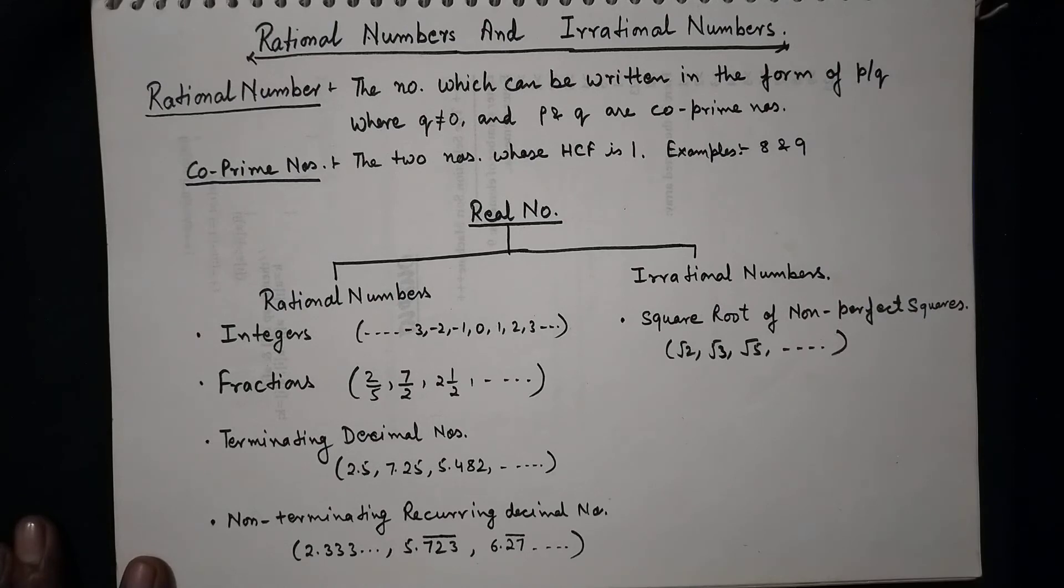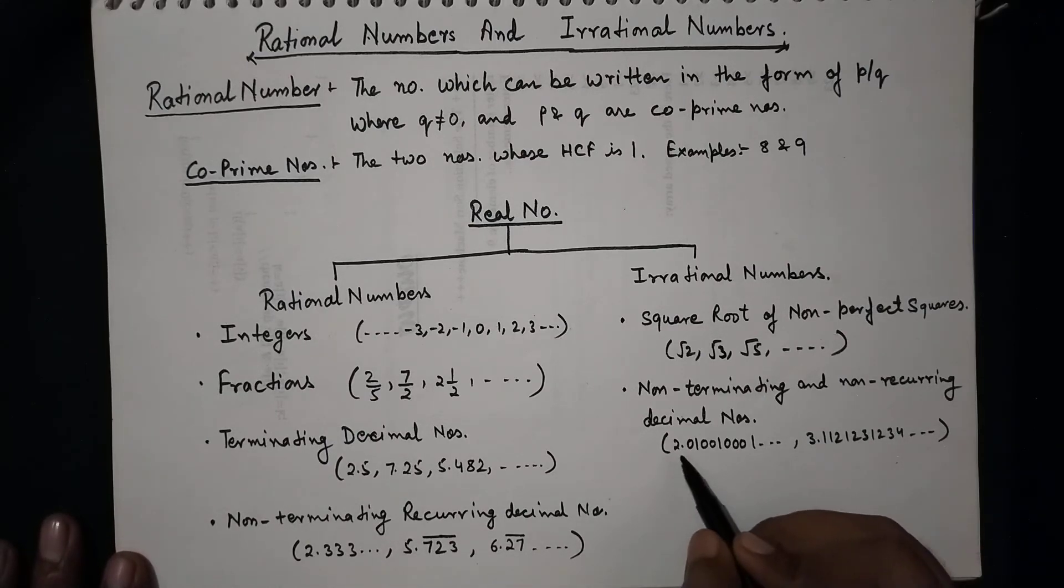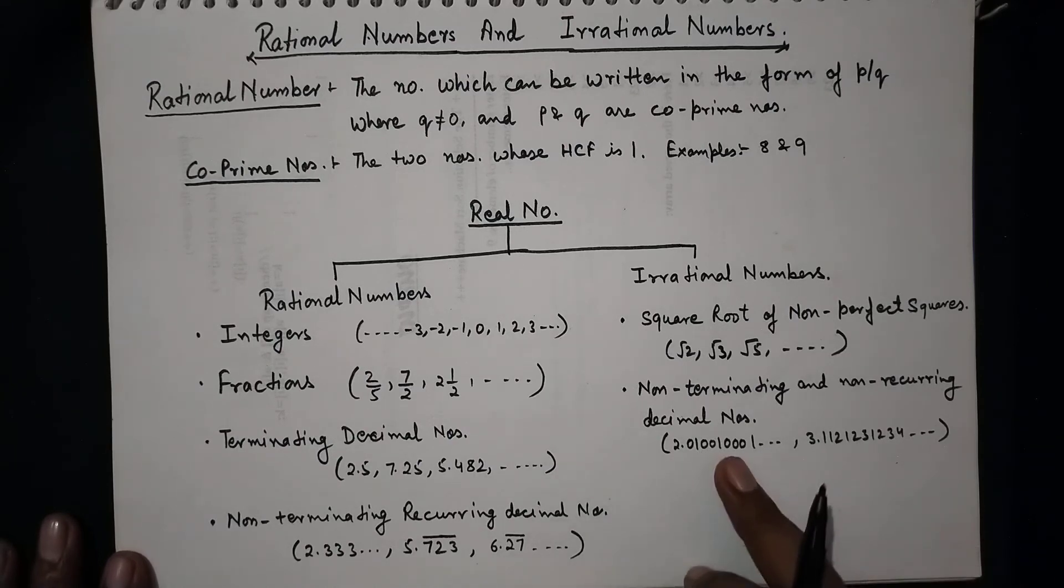So here we are going to find the root of those numbers which are not a perfect square. Then the next one is non-terminating and non-recurring decimal numbers. Here we take non-terminating and non-recurring decimal numbers in which we have taken an example like 2.01001000001. So we can't place a bar on it.